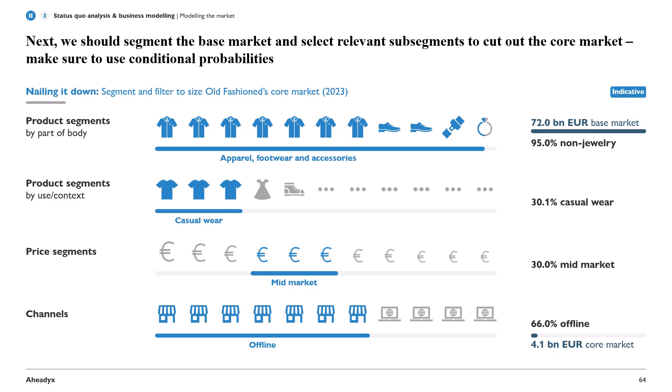And finally, Old-Fashioned only operates offline, so we should only take 66% of the market breakdown we arrived at so far. This then results in those 4.1 billion euro core market size per annum, which is really the core market that Old-Fashioned operates in.